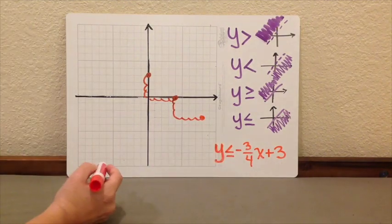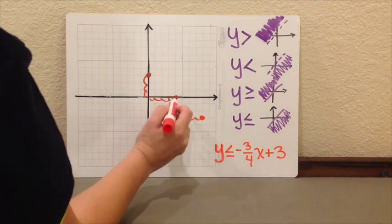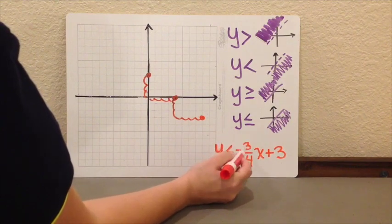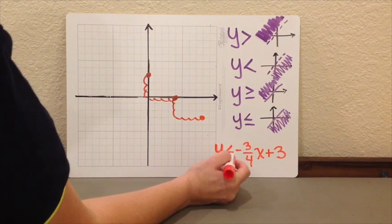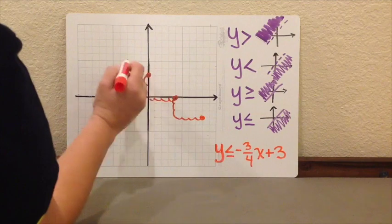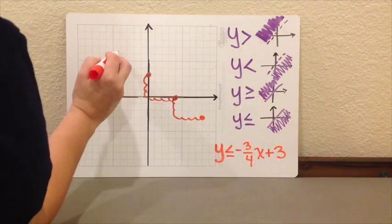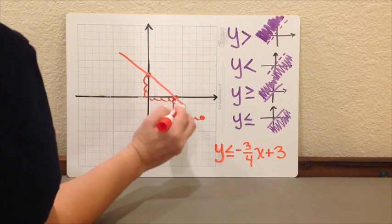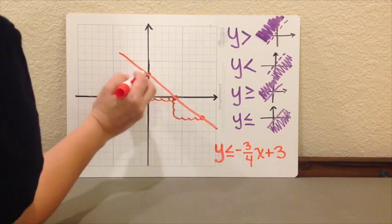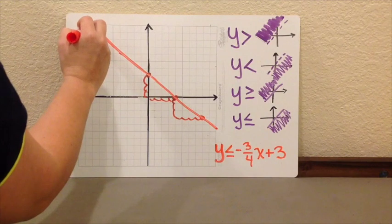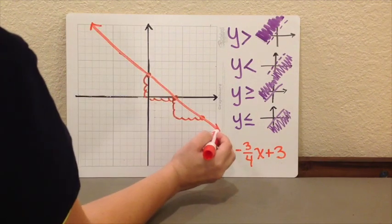After that, the only thing that you have to do is connect these dots. In this case, since we have the option of being equal, we are going to connect them using a solid line. So I am going to put my solid line as straight as possible. Don't forget to put your arrows because this line keeps going.